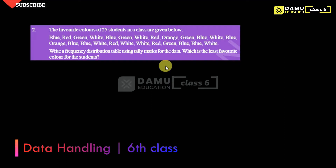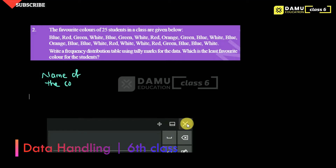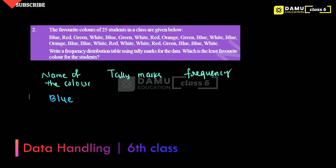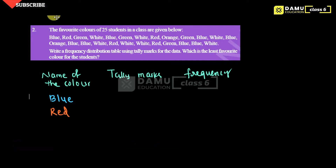So here we have to write one table. The columns are: name of the color, then tally marks, then frequency — that is, the number of times each favorite color gets repeated. So the colors listed are: blue, red, green, white, and orange.